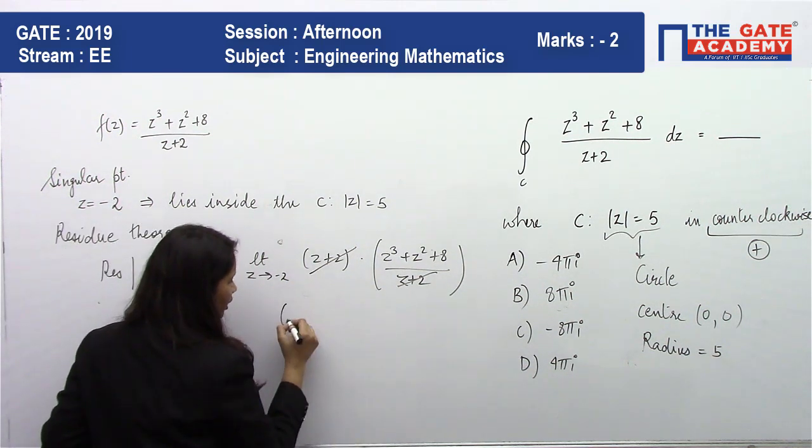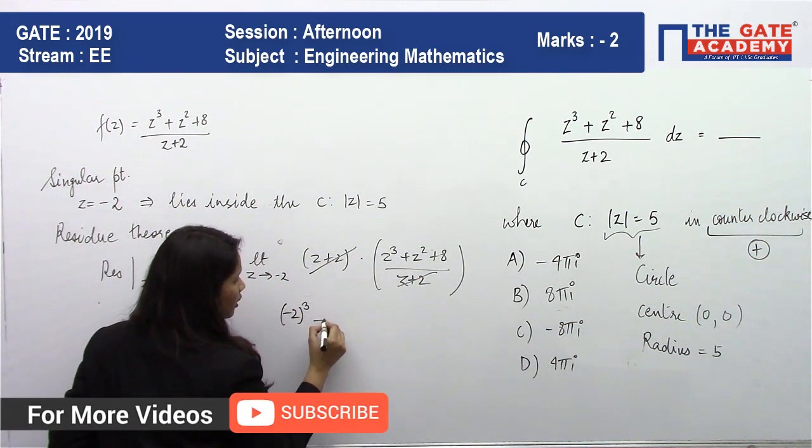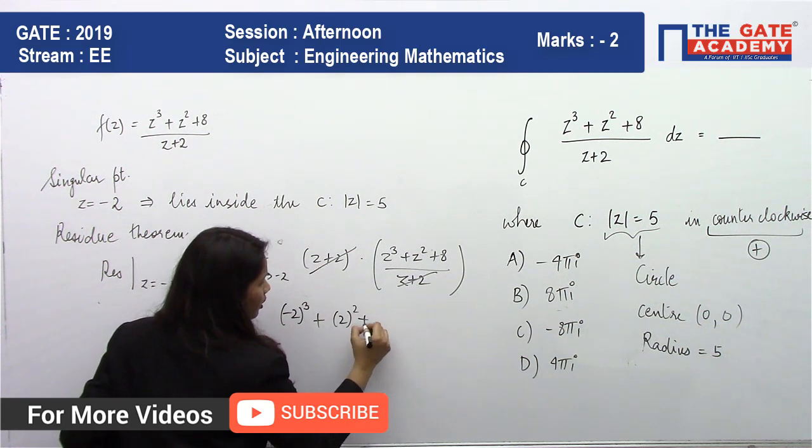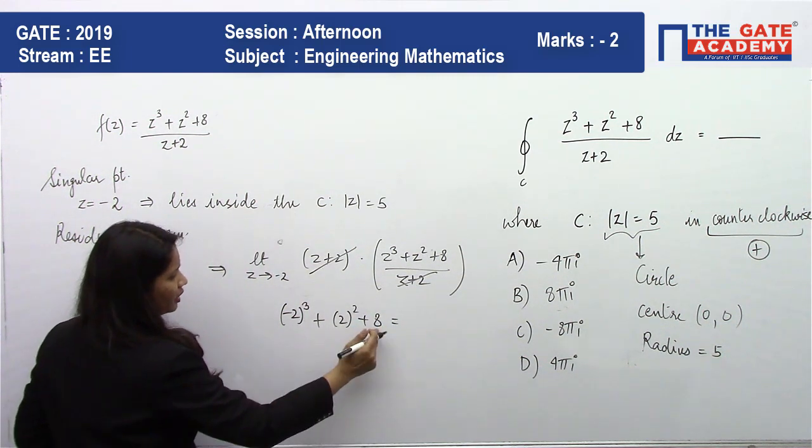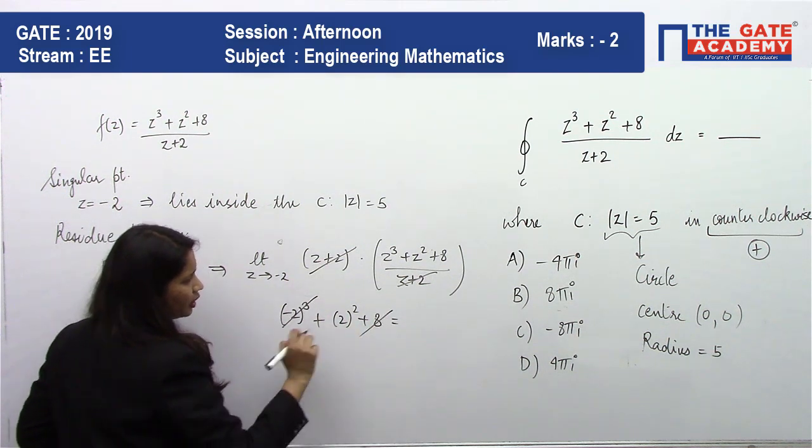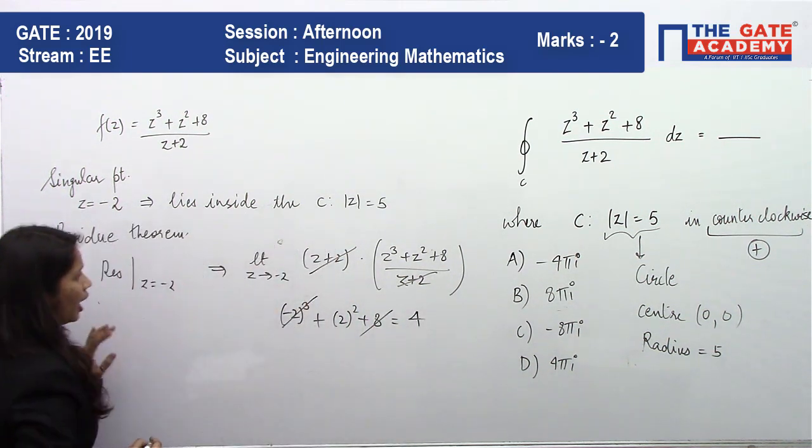Now substituting the limits, you will get (-2)³ + (-2)² + 8. This will be -8 + 4 + 8. -8 and +8 will get cancelled, you will be left with 4.